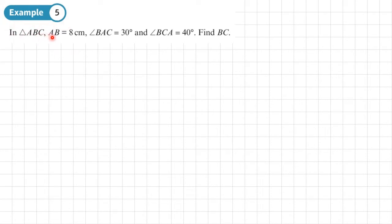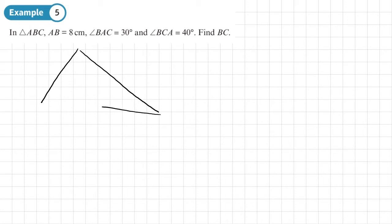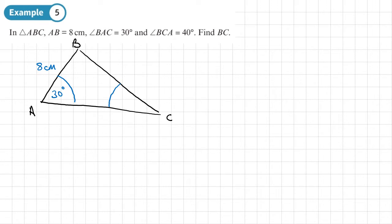Example 5: In triangle ABC, AB is 8 centimetres, angle BAC is 30 degrees, and angle BCA is 40 degrees. Find side BC. We start with a sketch — it doesn't need to be accurate, just to give us an idea of what it looks like. Label A, B, and C. AB is 8 centimetres, angle BAC is 30 degrees, and angle BCA is 40 degrees.